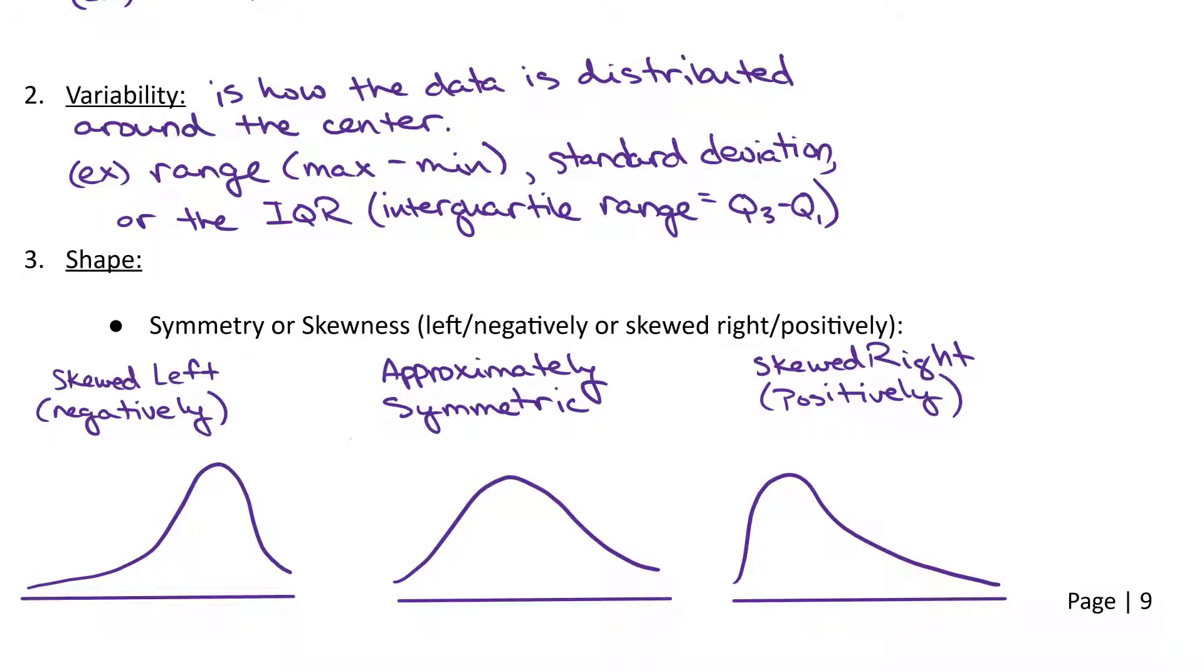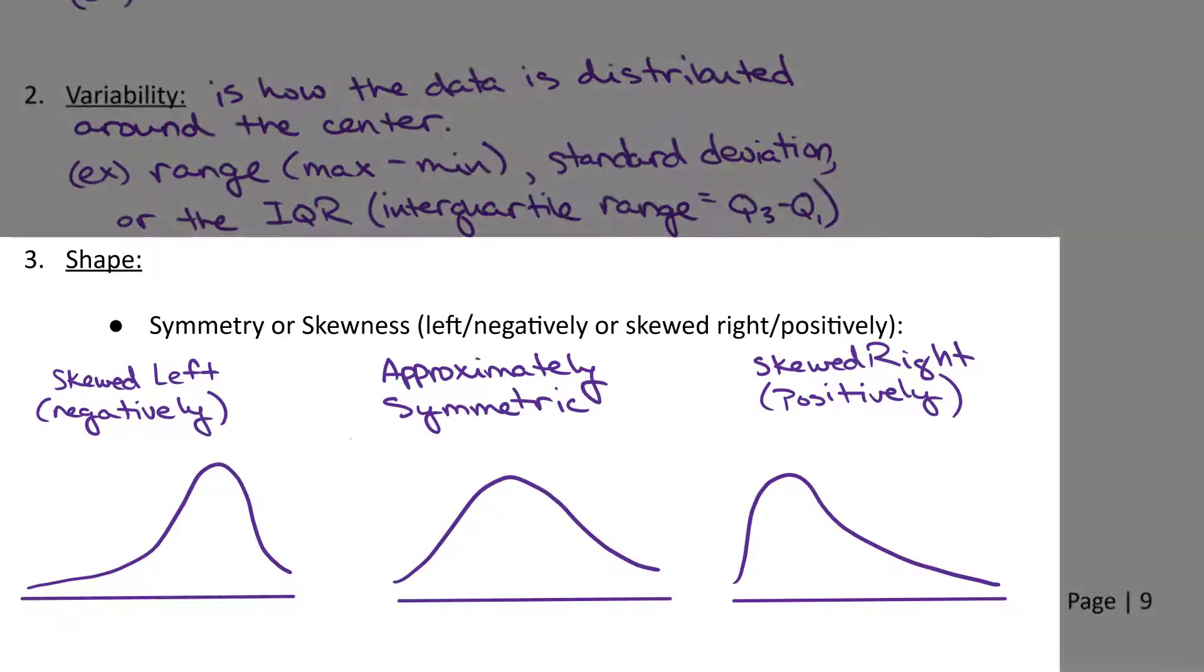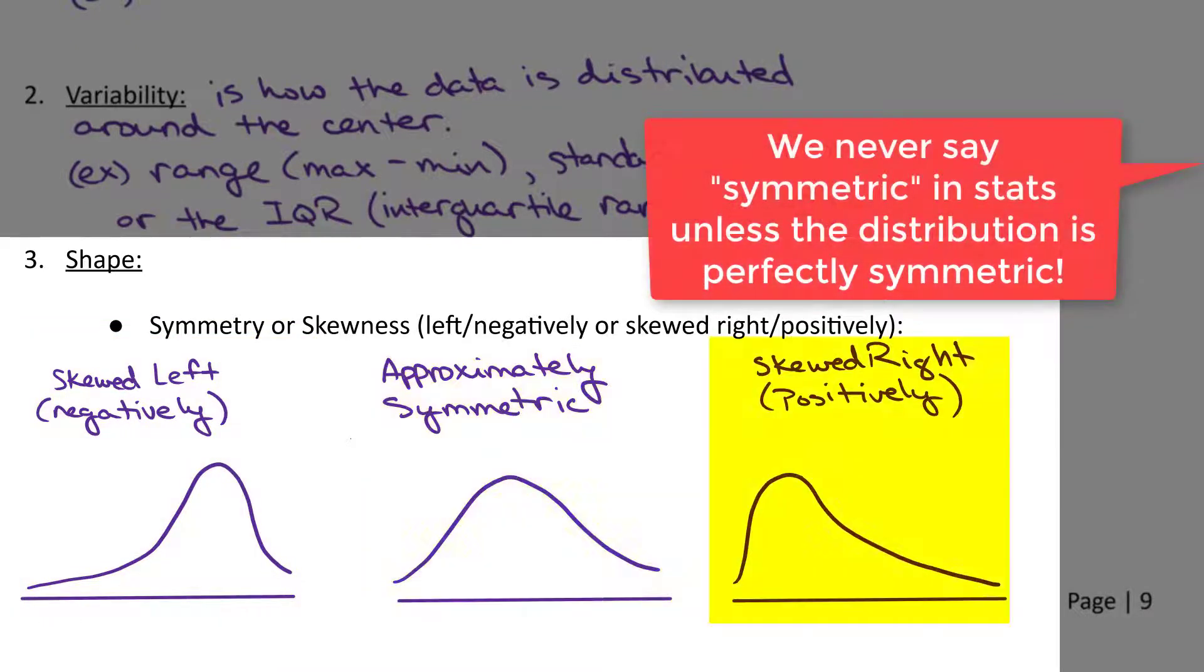And then, last to describe the shape, there's three main options we use to describe the shape: skewed left, approximately symmetric, and skewed right.